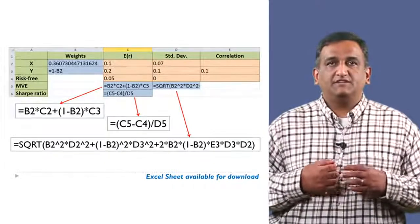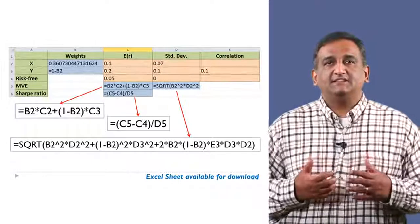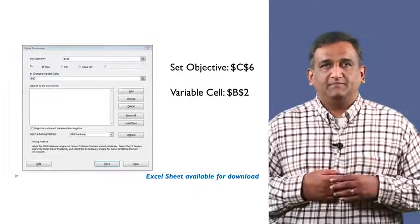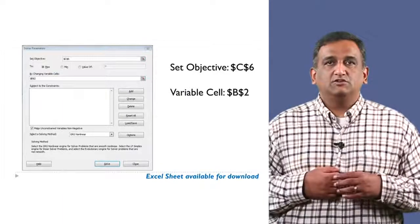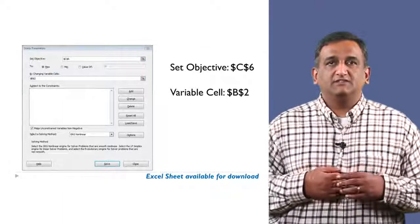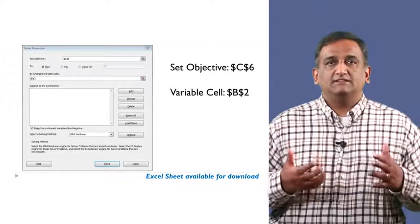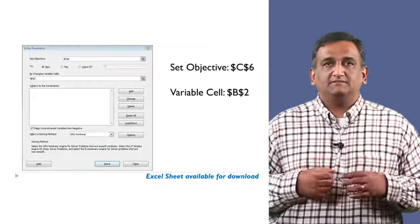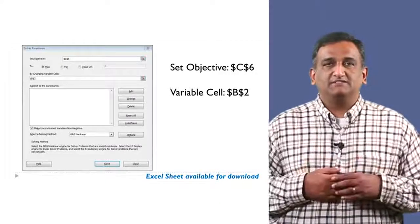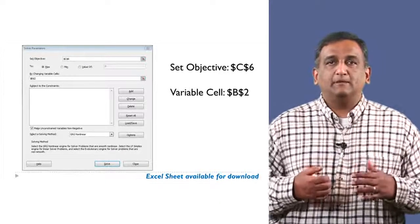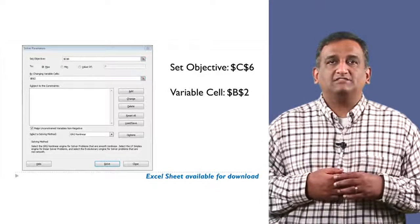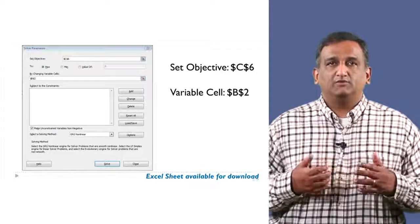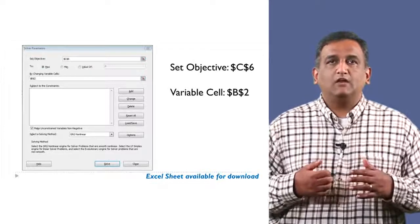Enter the formula for the Sharpe ratio in cell C6. Now open Solver in Excel. Set objective should be linked to cell C6 since we want to maximize the Sharpe ratio — click the button to the left of Max. Under 'By Changing Variable Cells,' select cell B2, as we want to maximize the Sharpe ratio by changing the weight of X in the portfolio. Then click Solve.